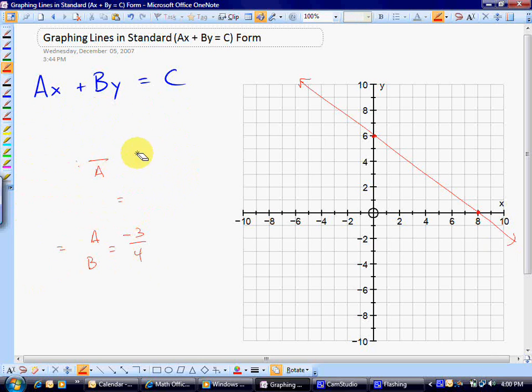For example, perhaps we have the line, or the equation, of 2x minus 5y is equal to 0.